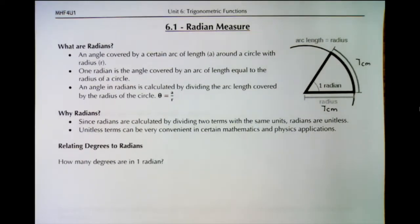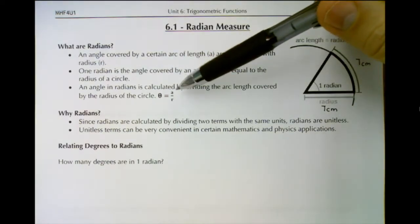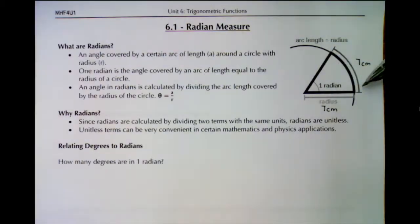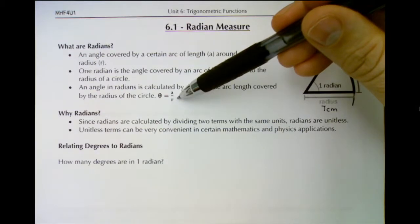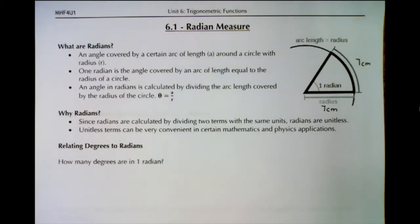So why use radians? Arc length and radius share the same units — in this case centimeters. To find an angle in radians, we take the arc length and divide it by the radius. When we divided seven by seven we got one radian. When you divide quantities with the same unit, the units cancel and you're left with something unitless — just a number with no units. That's the value of radians: it's unitless, and very valuable for certain mathematics and physics applications.